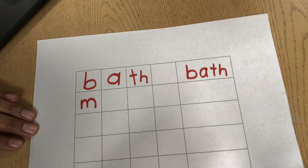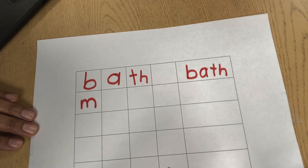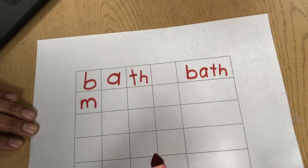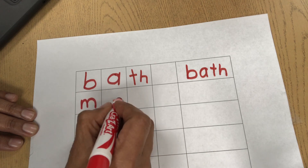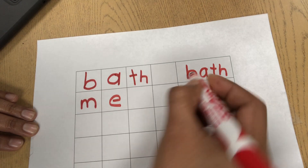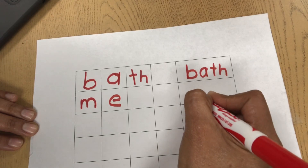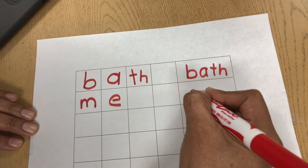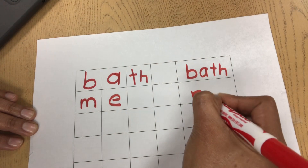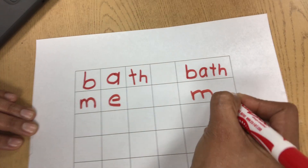We know the sound E is a vowel and it has the same sound as the letter name because there is no consonant after the vowel. I am going to write the letter E. On the line after the boxes I am going to write the whole word: me.